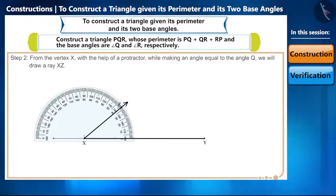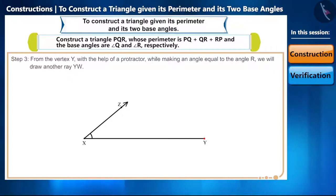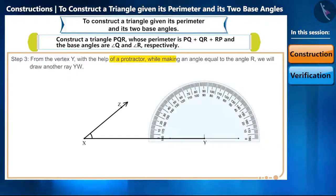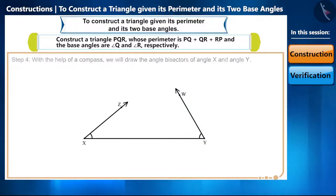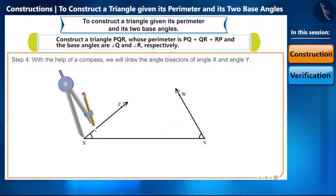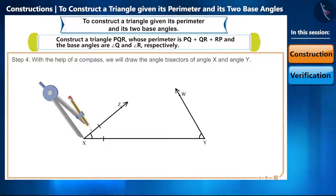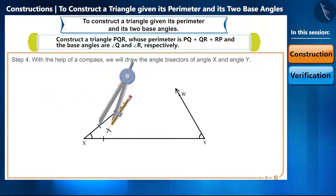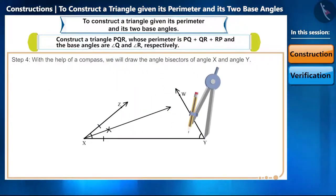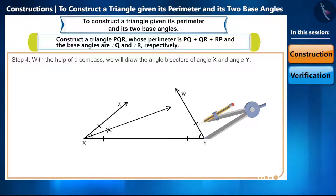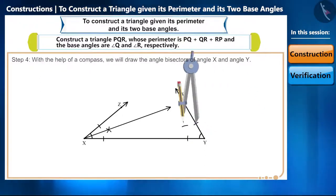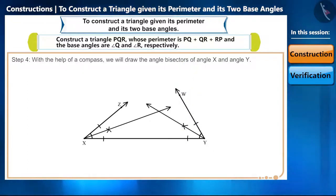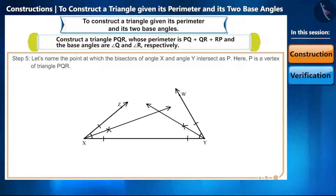Step 3: similarly, from vertex Y, with the help of a protractor, while making an angle equal to angle R, we will draw another ray YW. Step 4: now with the help of a compass we will draw the angle bisectors of angle X and angle Y.